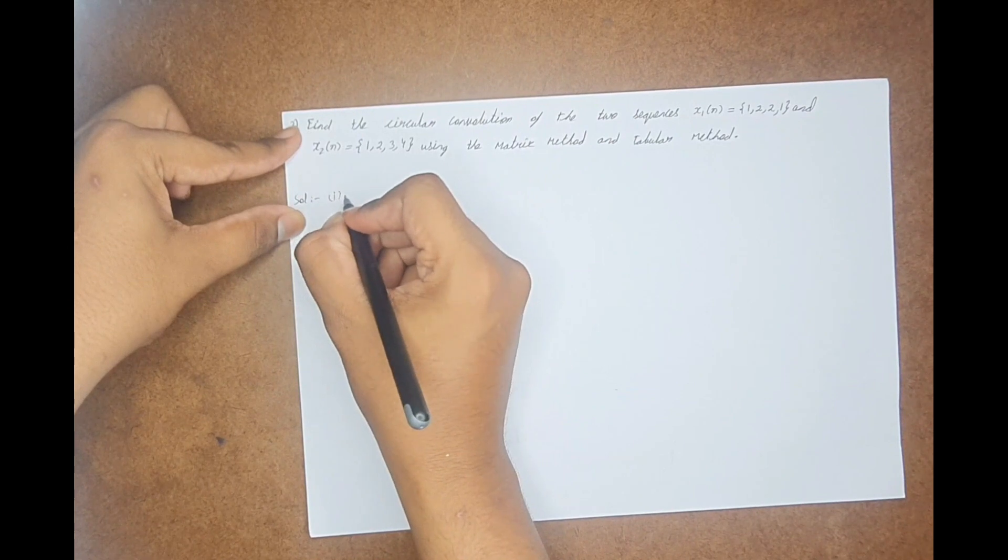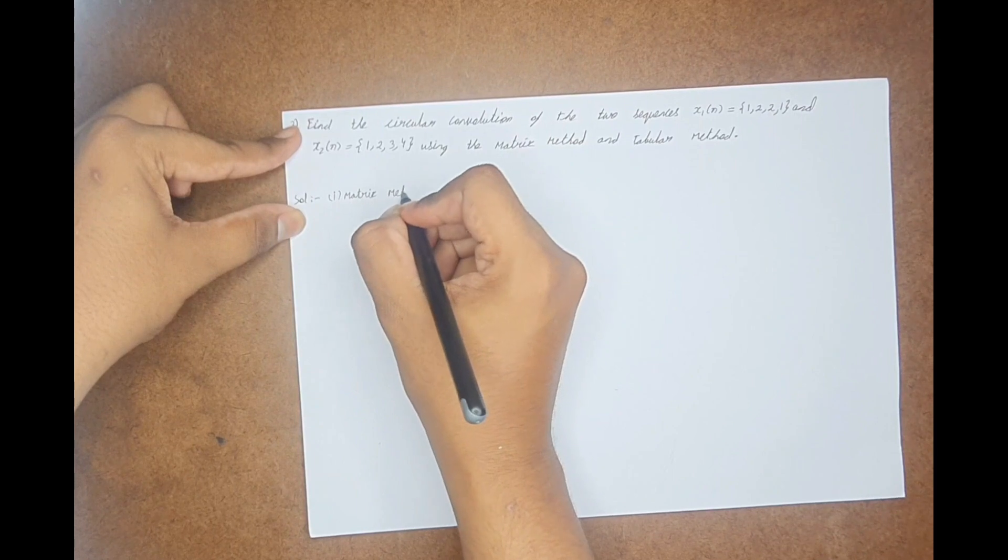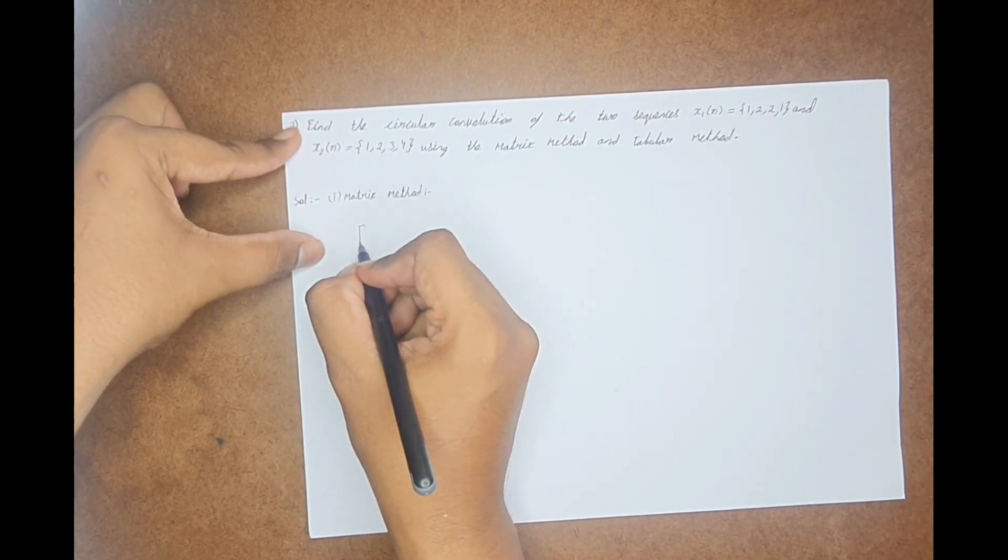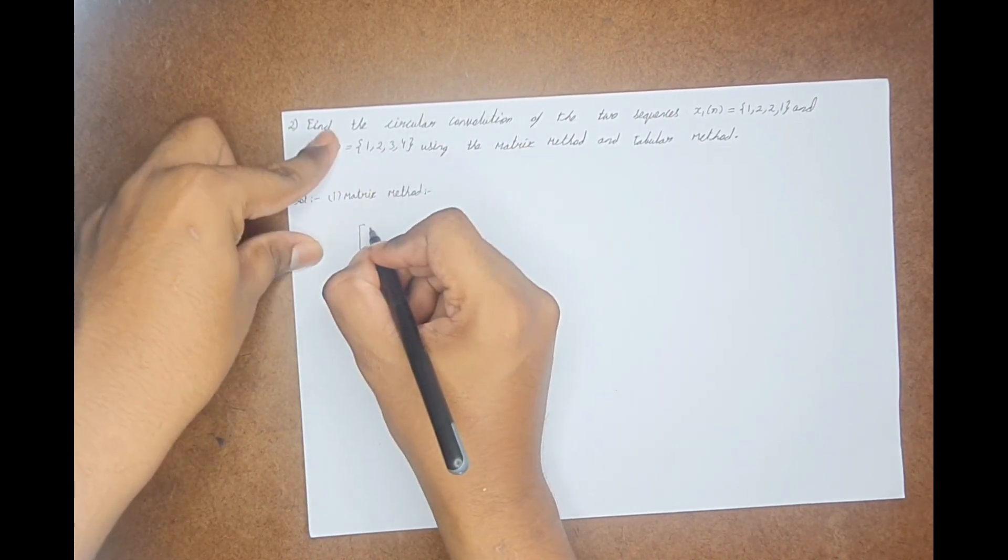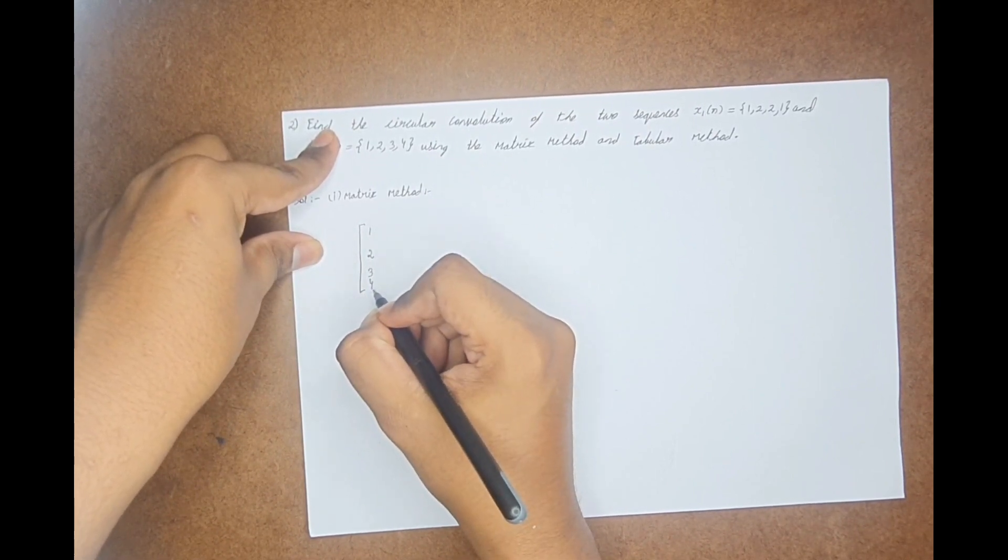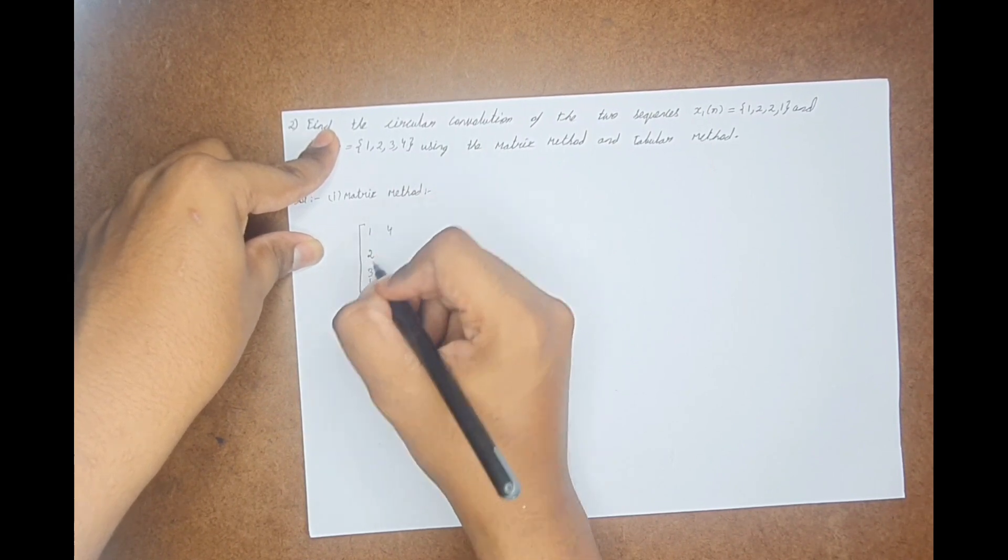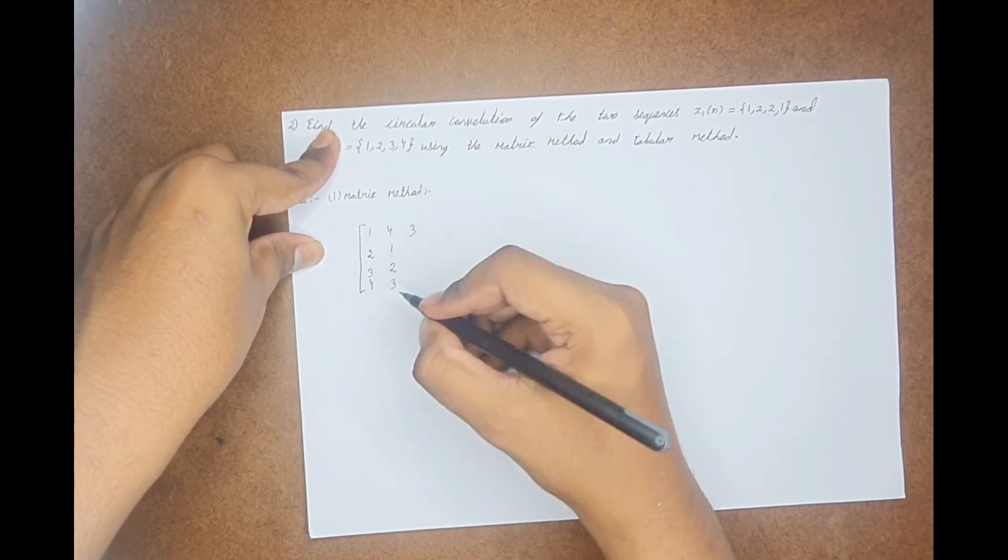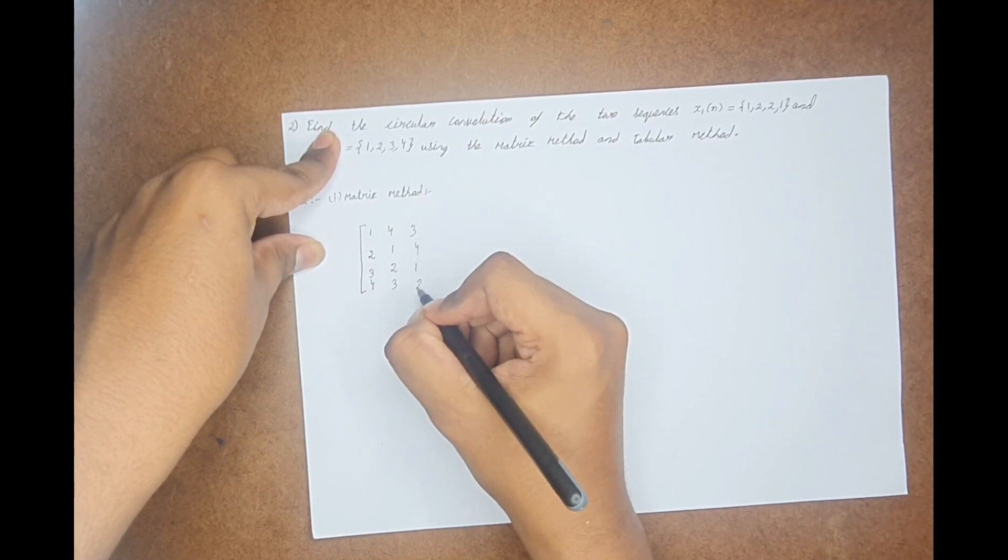First of all, let us see the matrix method. In the matrix method, you take a 4 by 4 matrix, and as x2(n) is given, you should write the first column like this. The second column, you need to just push the 4 upward and the other 3 comes down. Next column, you keep this value here and write the other values as it is.